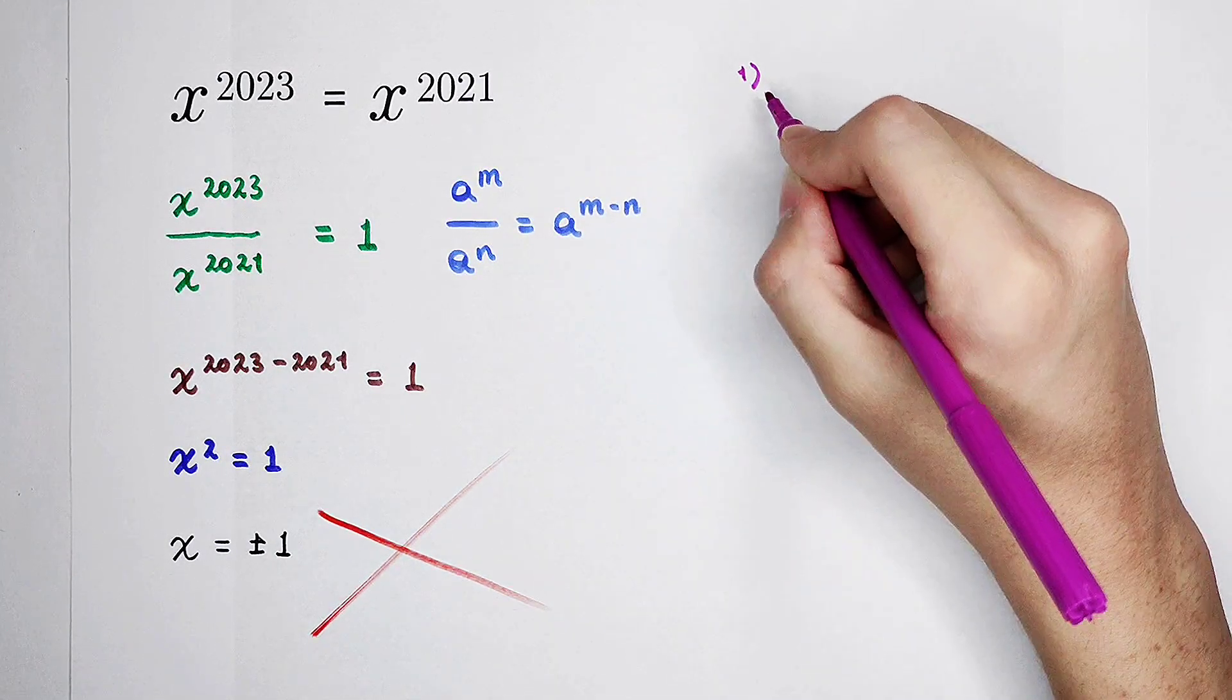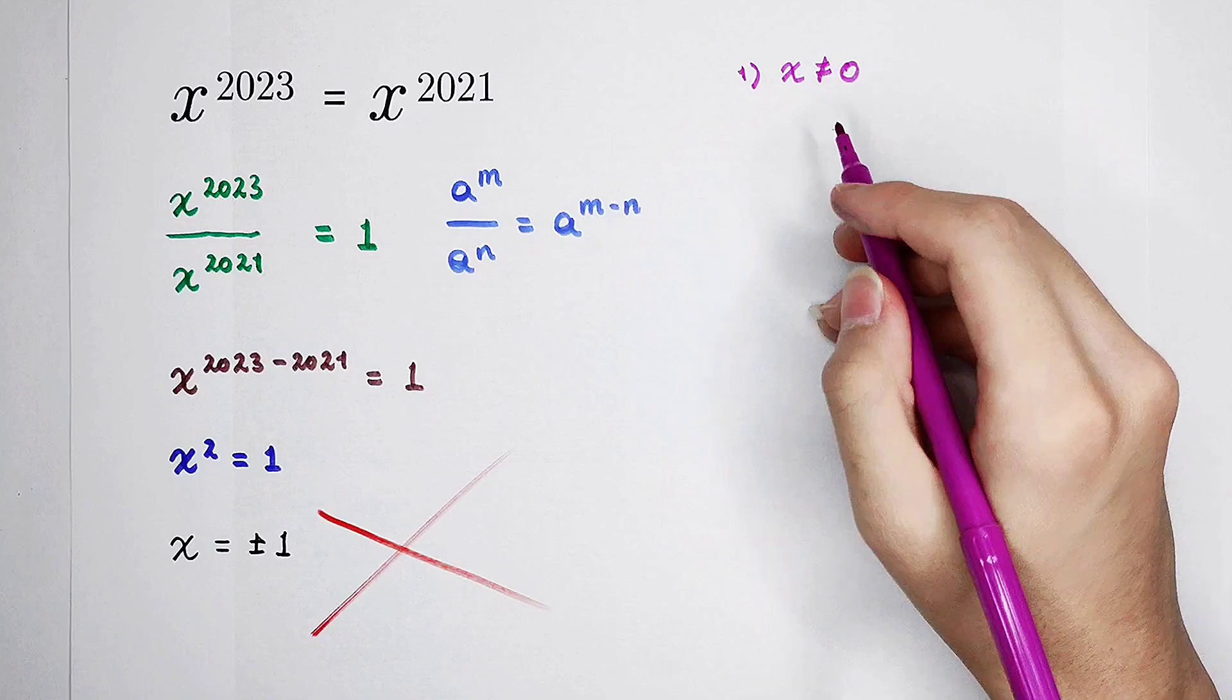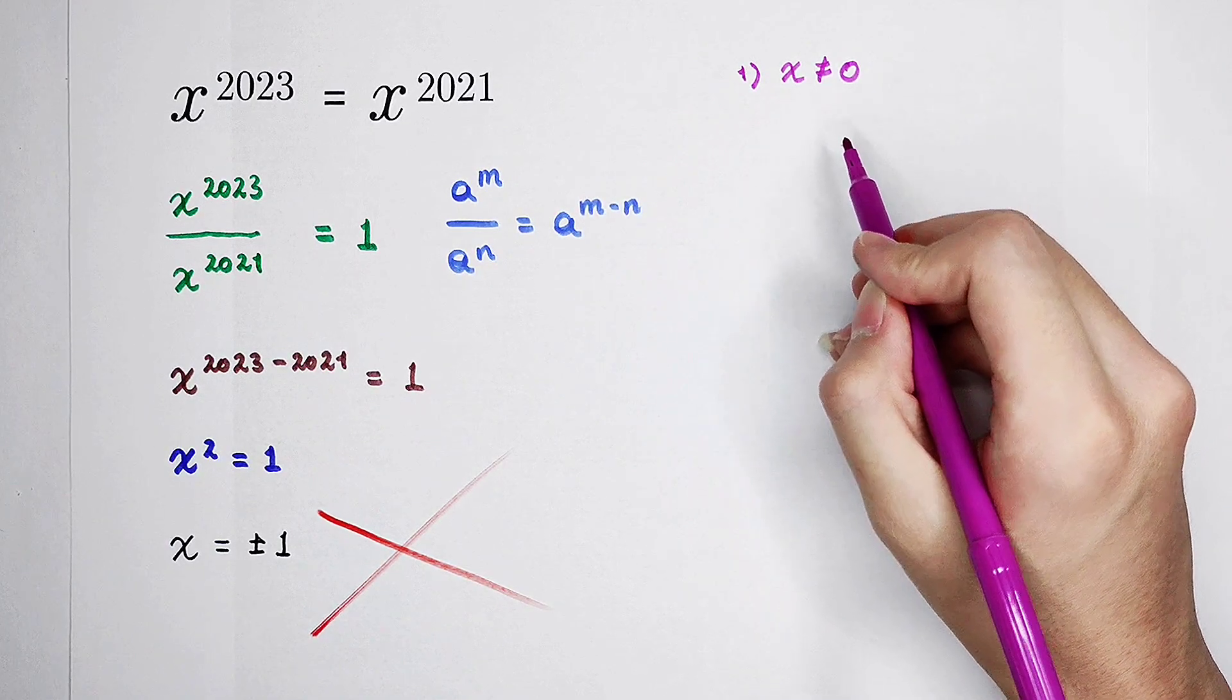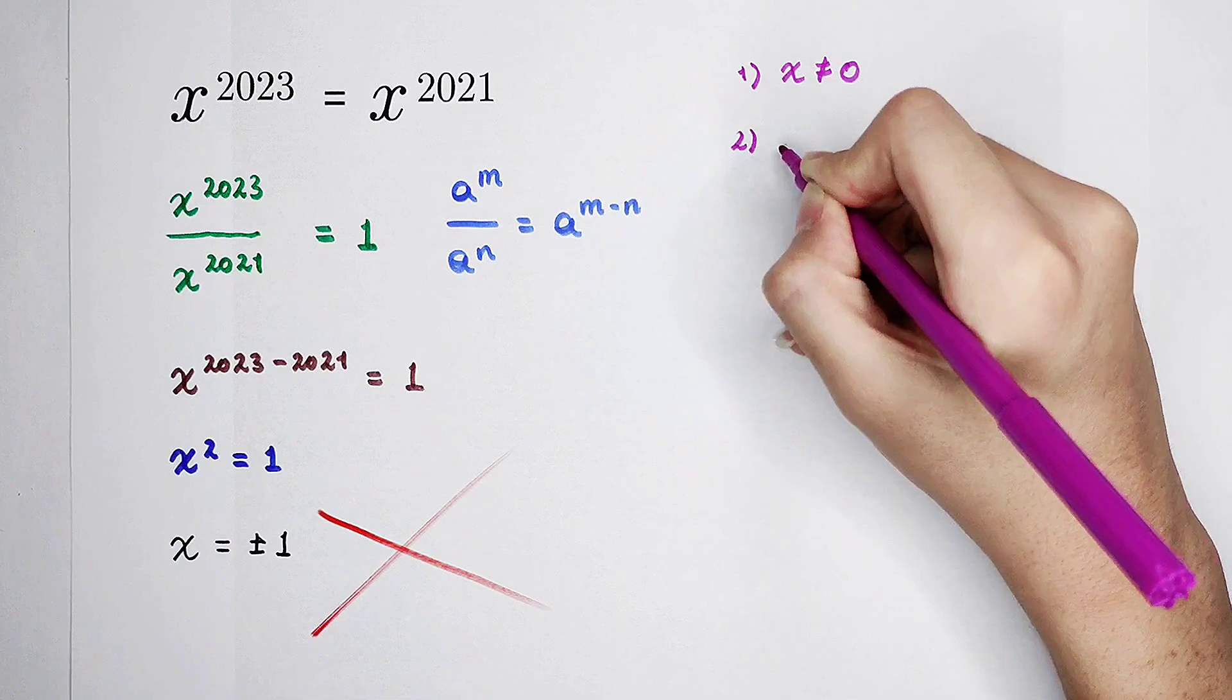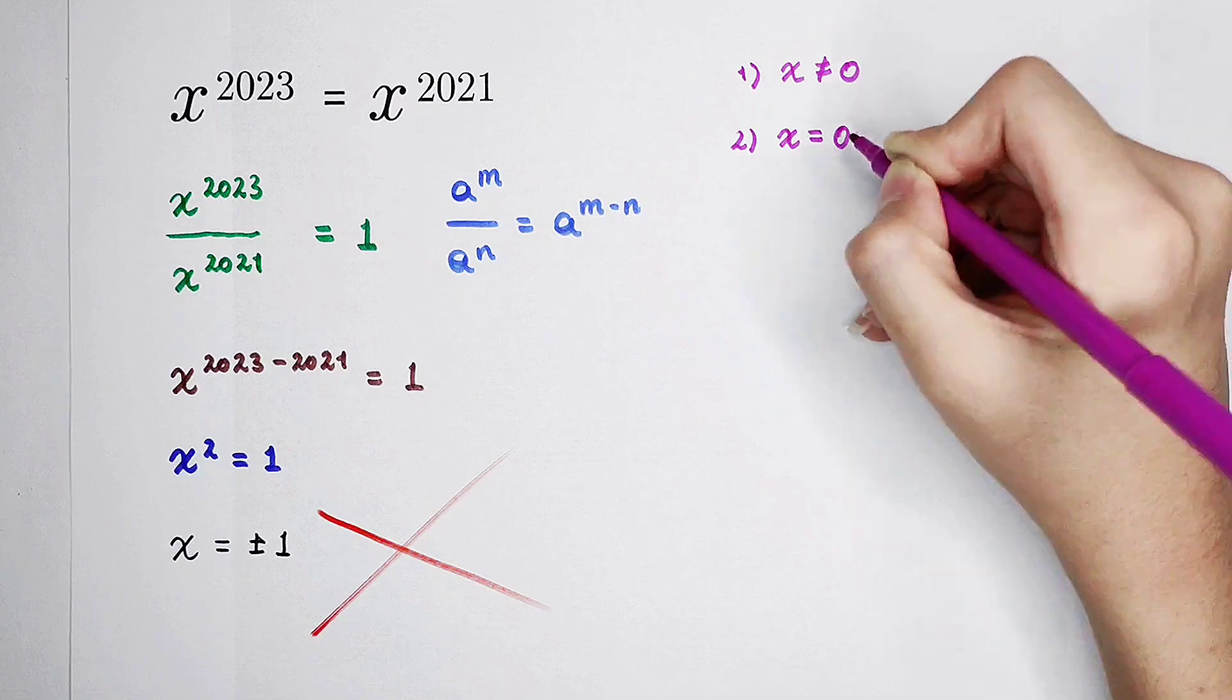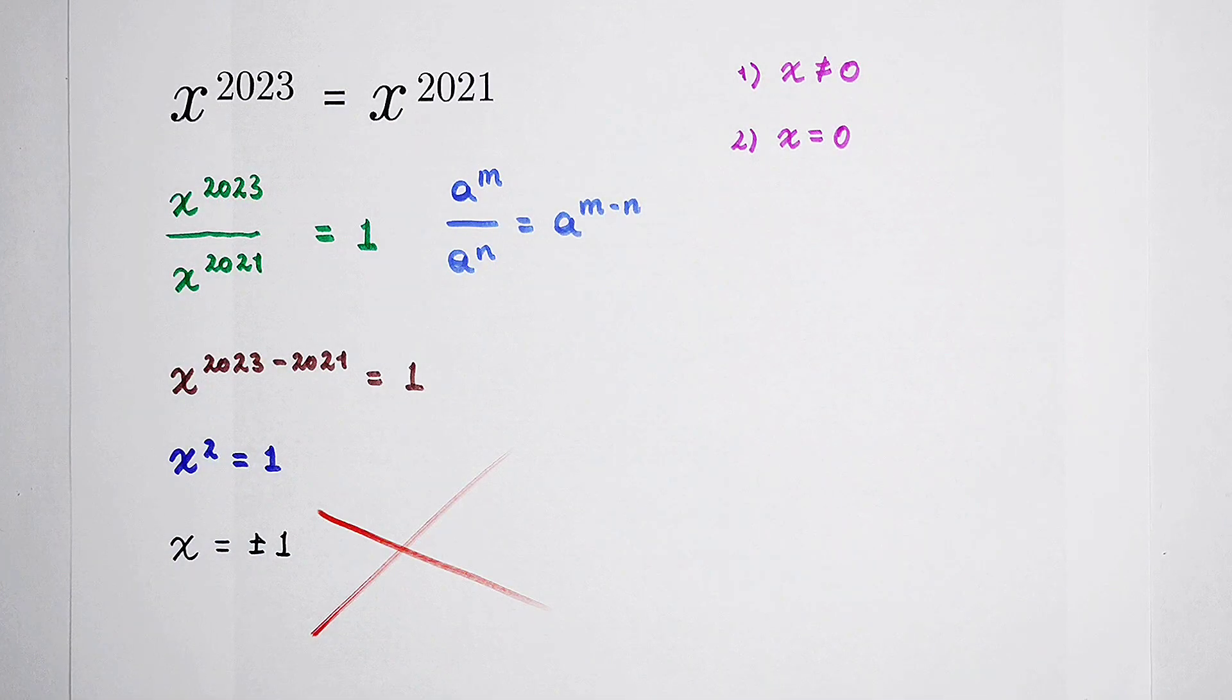So, the first step, when x is not equal to 0, and you divide x to the power of 2021 on both-hand side, you can get these two solutions. And for the second case, discuss x is equal to 0. And when x is equal to 0, this equation is correct. So this is the first method.